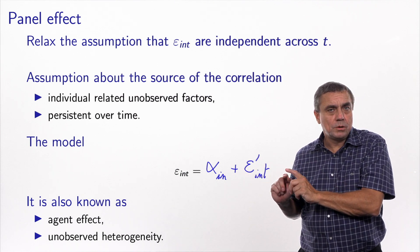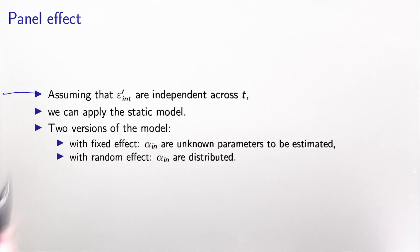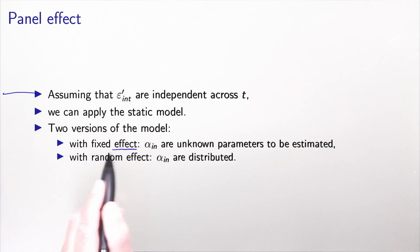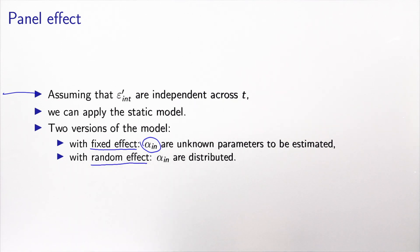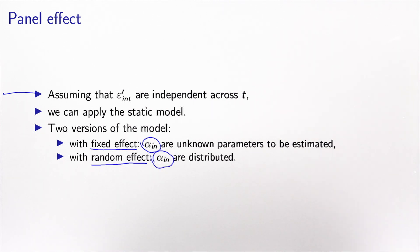If we assume that the epsilon primes are independent across t, we can apply the static model as before. There are two versions of this model: one called the model with fixed effect, where the alpha are unknown parameters to be estimated, and another called the model with random effect, where the alpha are assumed to be distributed. I will review the two of them separately.